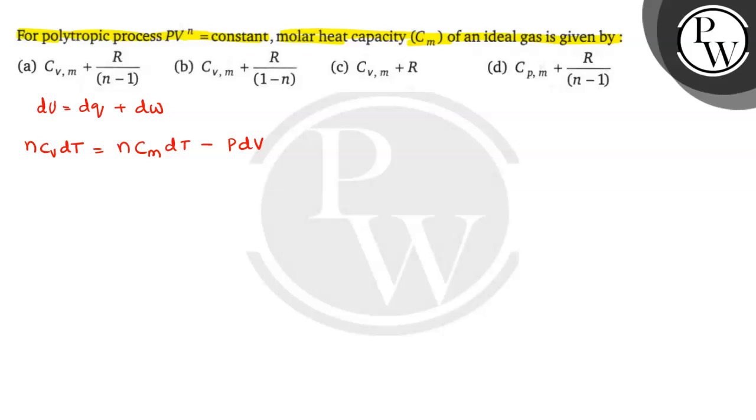Now first what we will do: I am dividing everything by n dT. On dividing by n dT, you will get Cv = Cm - PdV/ndT.